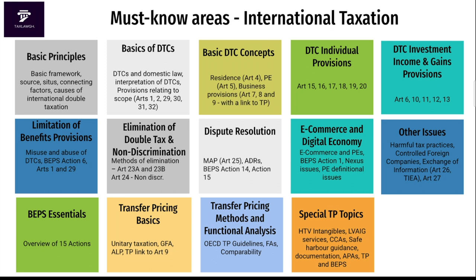Special transfer pricing topics include hard-to-value intangibles, low-value-adding intra-group services, cost contribution arrangements, revised safe harbor guidance, and transfer pricing documentation. There is a three-tier approach to documentation — you need a local file, a master file, and country-by-country reports where relevant. You also need to know about advanced pricing agreements (APAs) and the link between transfer pricing and base erosion and profit shifting.